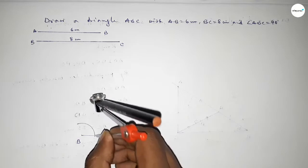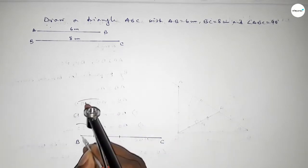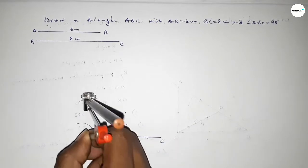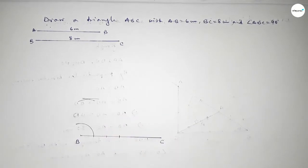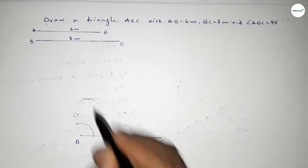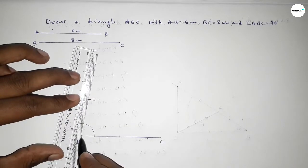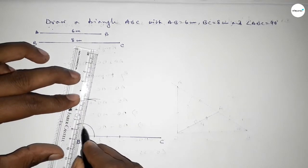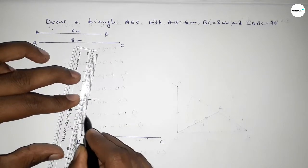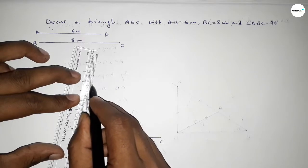Taking the length from point B to this point, putting the compass on this point and drawing an arc again with the same length, then putting the compass here and cutting here. Both curves intersect at a point — now joining this to get an 80 degree angle.